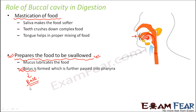Mucus lubricates the food, and the bolus — a ball-like mass of all the food particles just chewed and mixed with mucus and saliva — is further passed into the pharynx. Since it is slippery, slimy, and spherical in shape, it becomes easier to swallow and slips down the throat. The tongue, being movable, helps in proper mixing of the food inside the oral cavity and also helps to push the bolus through the throat, aiding in swallowing.